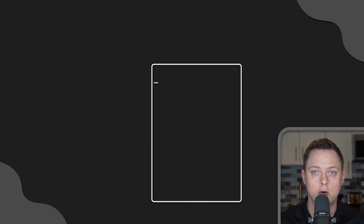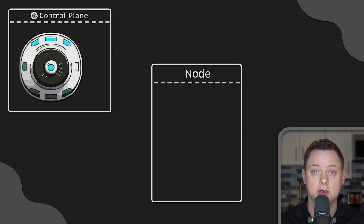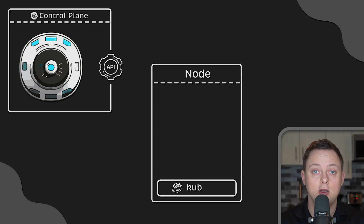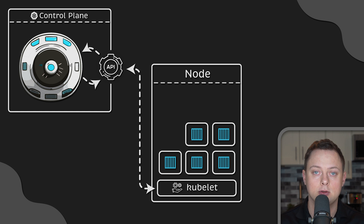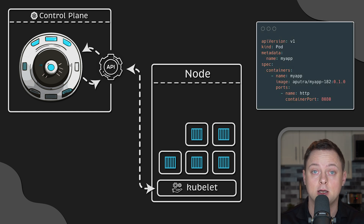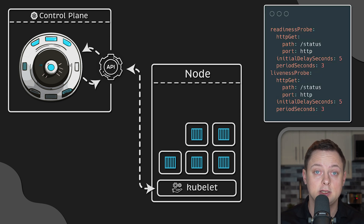First, let's explore worker node components. These components run on every single node and are used to provide the Kubernetes runtime environment and run the pods. The first one is kubelet. It is responsible for the node joining the cluster, establishes a connection with the control plane, and runs containers on that node. It takes pod specs from the control plane and ensures that the containers described in those pod specs are running and healthy. For example, it can use health checks such as liveness or readiness probes to verify the status of applications.